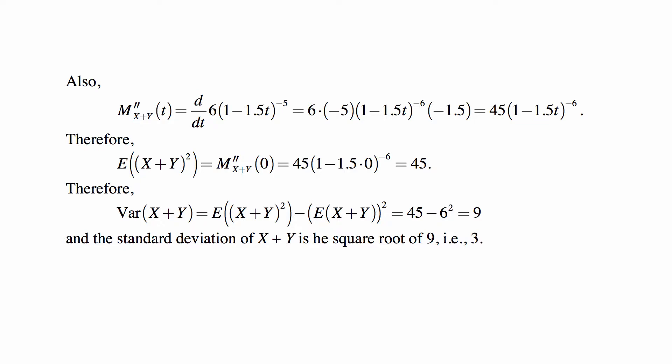And that means that the second derivative's value at 0 is the second moment of X + Y, and it's 45. So that the variance is the second moment minus the square of the first moment, so 45 - 6^2, and that's 9. And the standard deviation is the square root of that, and that's 3. And this looks like a very good solution, nothing to complain about.